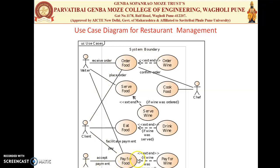In this diagram there are four actors — Waiter, Client, Cashier, and Chef. This shows the behavior of the system: what each actor is doing, how they are related, how they are connected, and how communication happens between them.